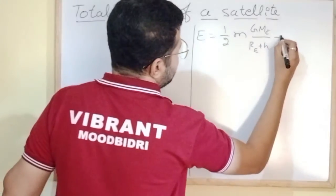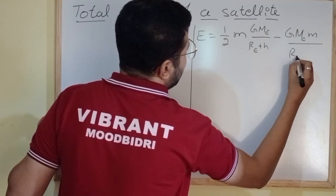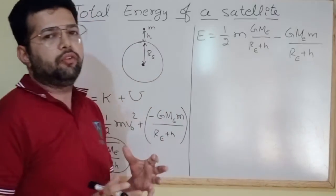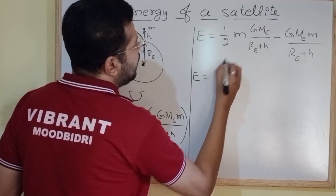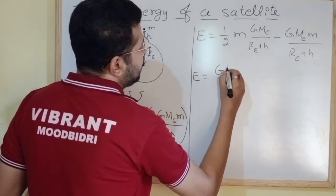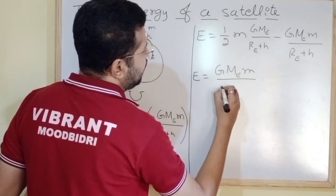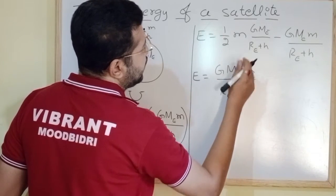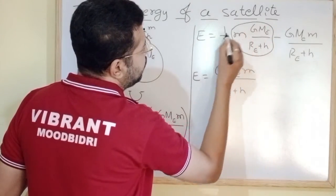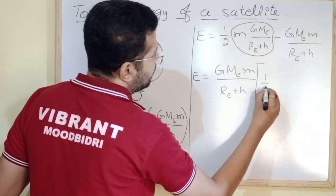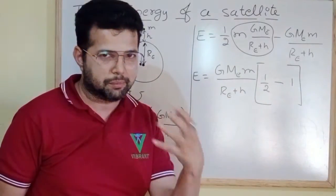Now we will take the common factors. G is common, mass of Earth is common, mass of the satellite is common, and divided by (R_E plus h) is common. When you take all these out, what is left is half from the first term and minus 1 from the second term. We know that half minus 1 is minus half.